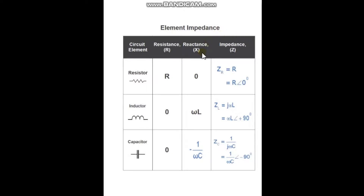Let's recall the reactance and impedance of an RLC circuit. For the circuit element resistor, we have a reactance X equal to zero. Impedance Z is written in complex form — we have the rectangular form and the polar form. The impedance of a resistor in rectangular form is simply R, and in polar form we have R at an angle of zero.